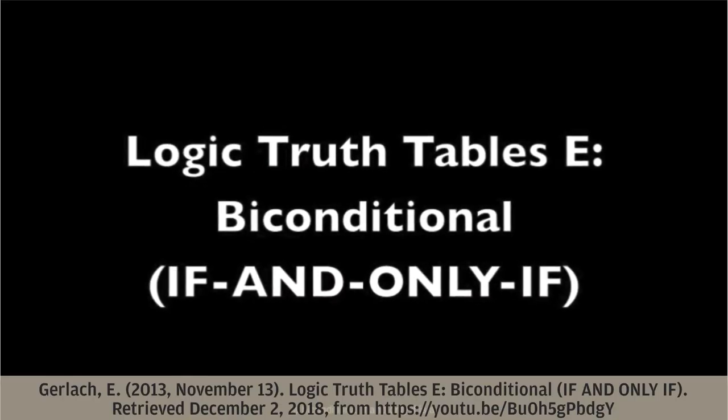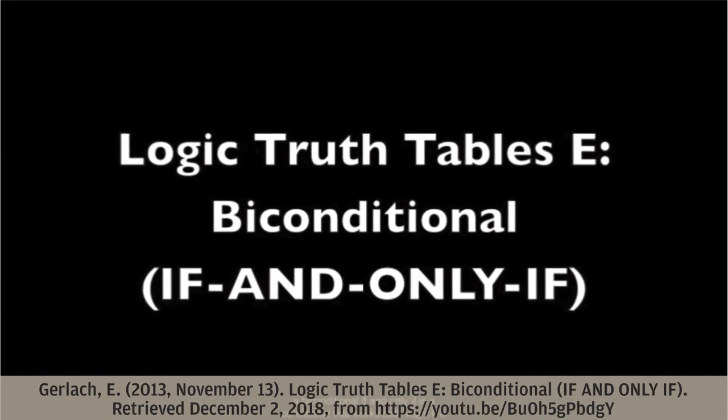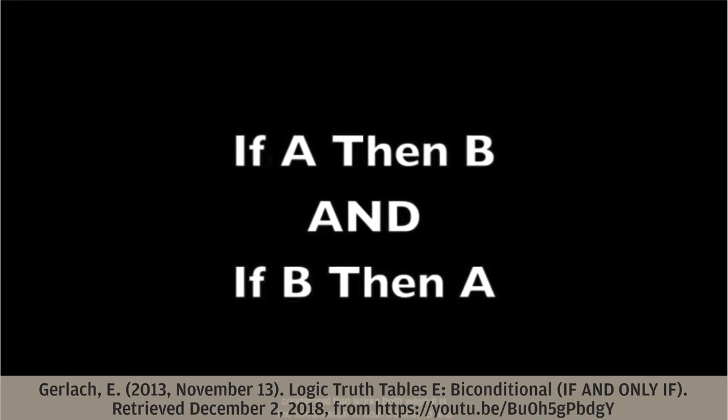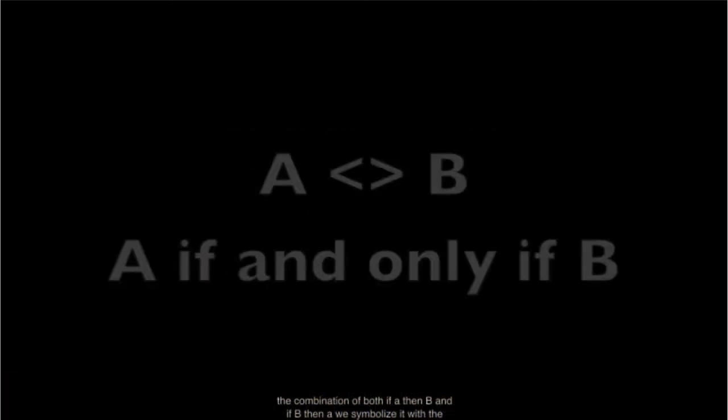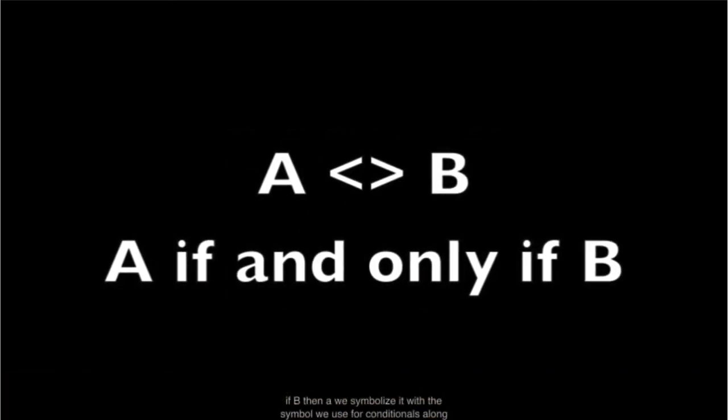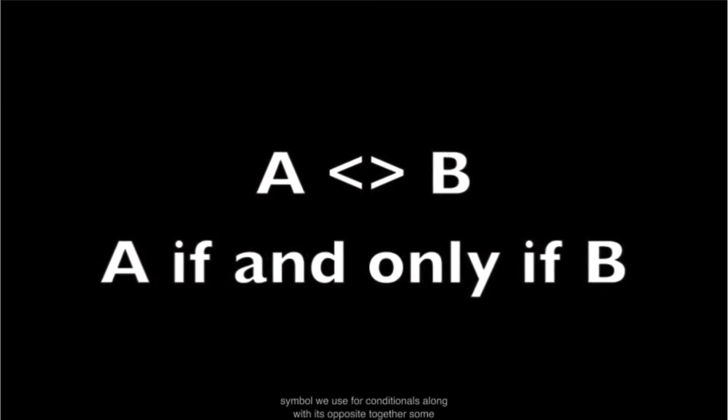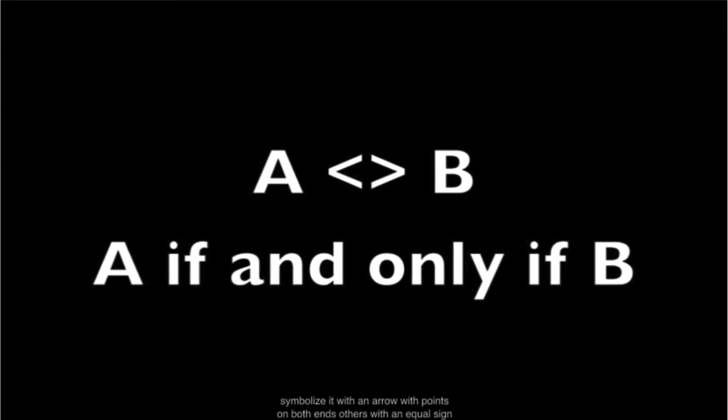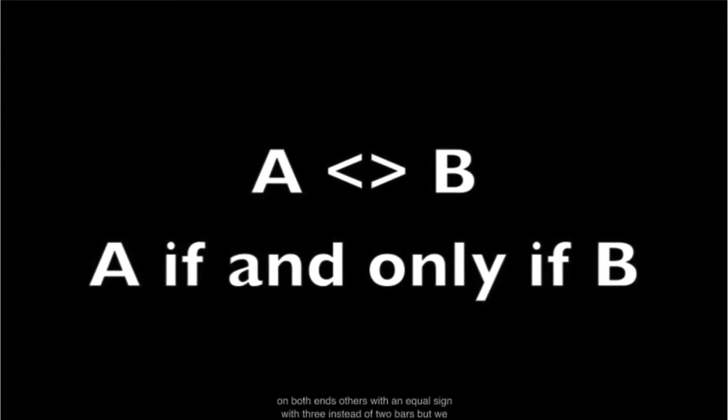A biconditional, if and only if, is a conditional that works both ways. It is the combination of both if A then B and if B then A. We symbolize it with the symbol we use for conditionals along with its opposite together. Some symbolize it with an arrow with points on both ends, others with an equal sign with three instead of two bars.